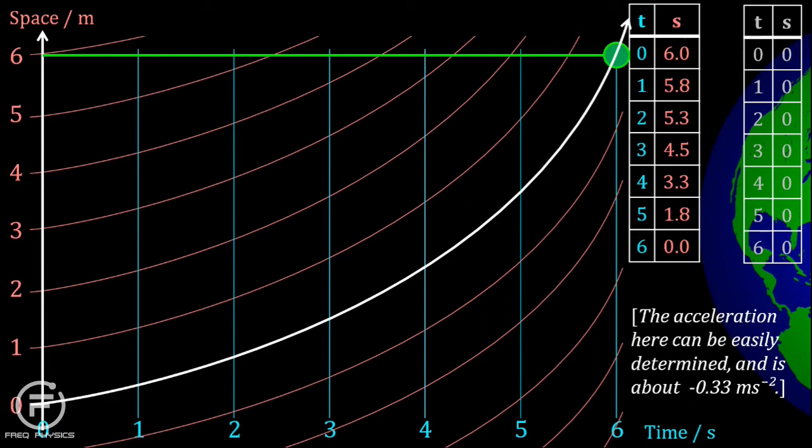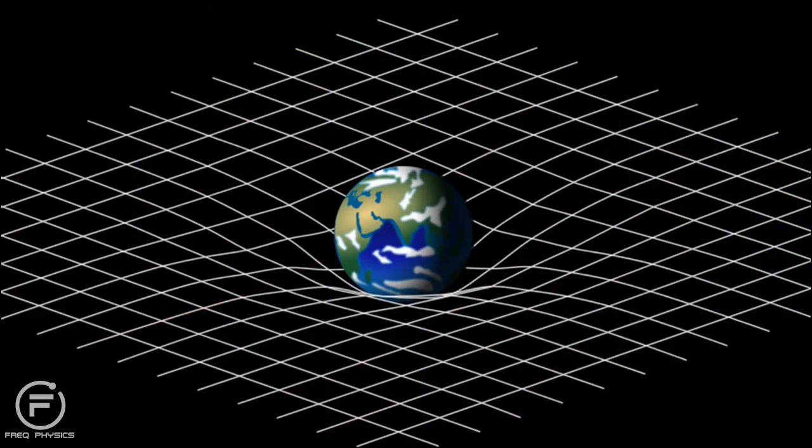Notice that there is nothing actually pulling on the object. It's still following a straight path through space-time, according to Newton's first law. The object just appears to accelerate, because space-time is not flat.